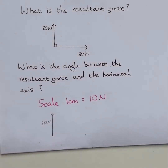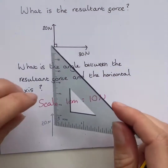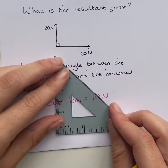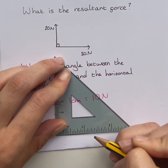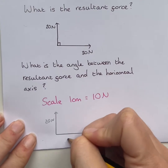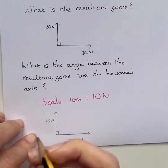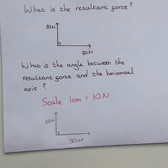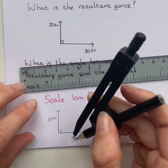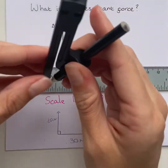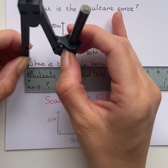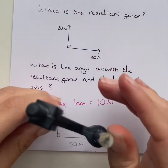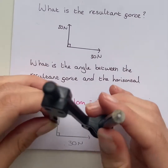I'm going to use a set square from my geometry set just to check that there is definitely a right angle between them. So I've redrawn that diagram to scale. The next thing I need to do is get my compass out and set it to one of these forces. I'm going to set it to 3 centimetres, which is the size of the 30 newton force, and then go to the opposite 20 newton force.